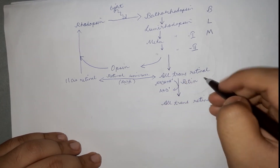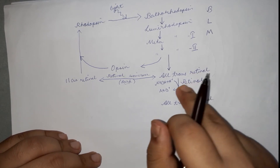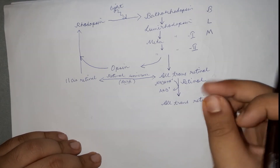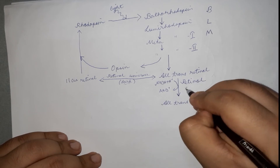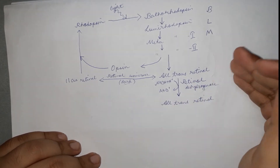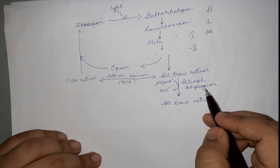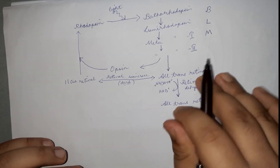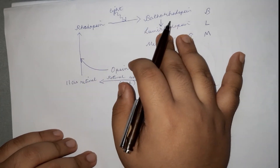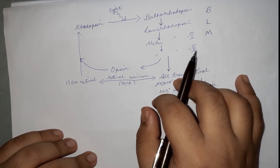The enzyme for this conversion is retinol dehydrogenase, also called alcohol dehydrogenase. Importantly, retinol dehydrogenase requires zinc as a cofactor — so a deficiency of zinc can inhibit this cycle and impair vitamin A function. That is why zinc is needed for vitamin A function.